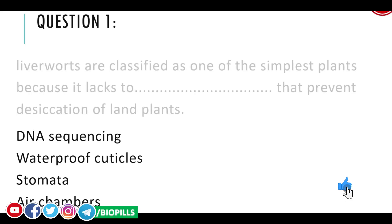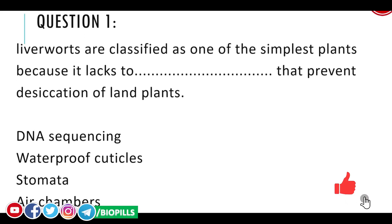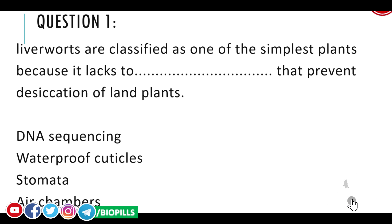Question number one: liverworts are classified as one of the simplest plants because they lack two things that prevent desiccation of land plants. The word desiccation means dryness. The choices are: DNA sequencing, waterproof cuticles, stomata, or air chambers.